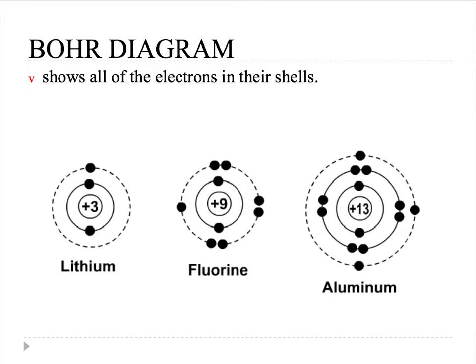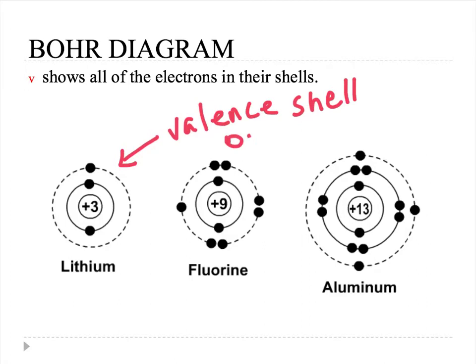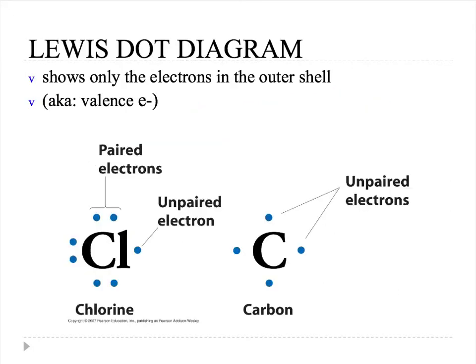We practiced doing Bohr diagrams, which basically show all the electrons in their shells. The outer shell is shown as a dashed line, and that's what we call the valence shell — the outer shell. We then took a look at the Lewis dot diagram, which shows only the electrons in the outer shell, the valence electrons. These are just examples of carbon and chlorine.